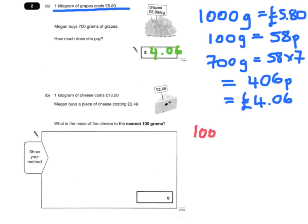Then it says one kilogram of cheese costs £13.50. Again, that's a thousand grams is £13.50 or 1350 pence. Let's again just check. What we're doing here is finding out the price per gram.